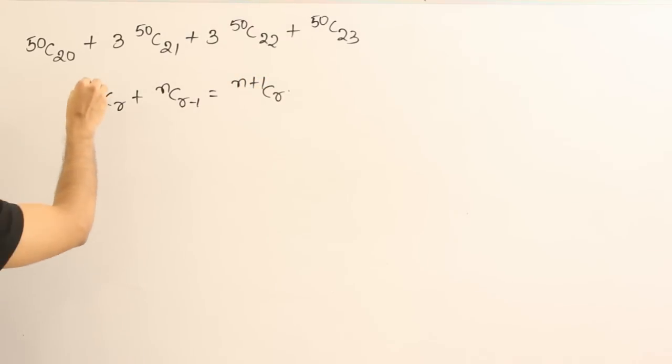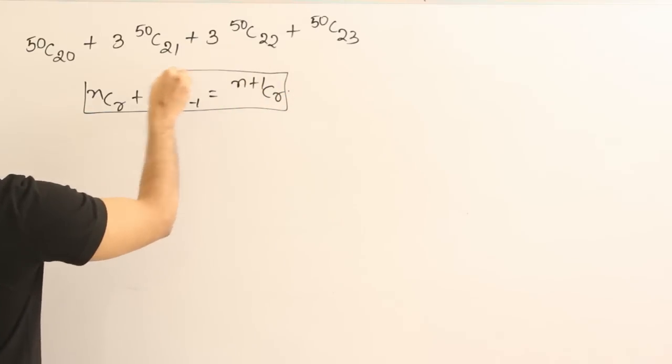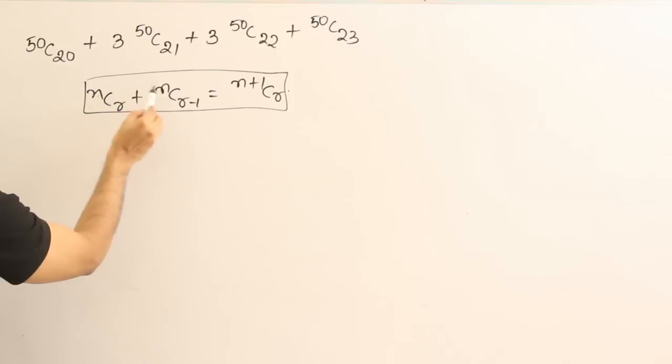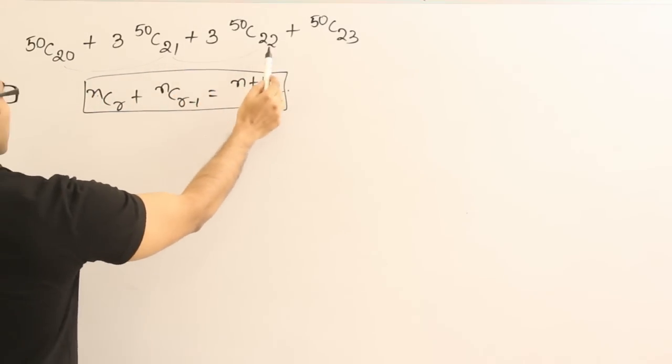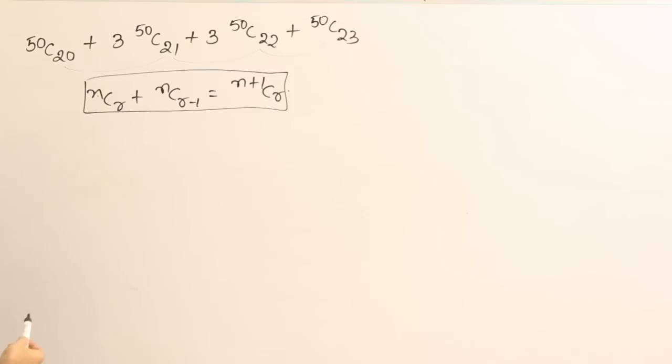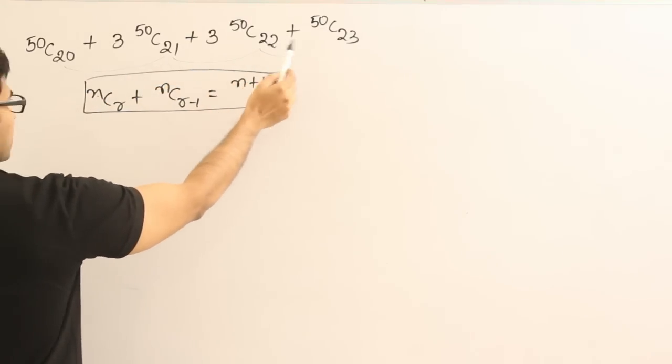Now, using this when you are trying to combine two terms using this result, always we have to see that the n is same. Right? And then what about the r? They have to differ by 1. Now check what about all these. All of them are having n as same. So you can combine any one of them and each one of them is actually differing by 1. So which ones do you want to combine? I can combine this one with one term here or I can combine this one with this or this one with this.